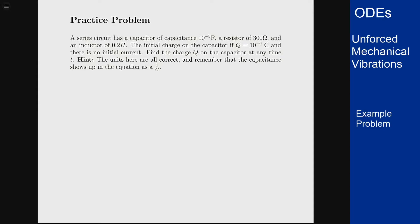In this example we want to analyze the following circuit and see how it's going to behave as a function of time. We have a series circuit with a capacitor of capacitance 10 to the minus 5 farads, a resistor of 300 ohms, an inductor of 0.2 henrys, but initial charge on the capacitor, that's our initial condition, is q is 10 to the minus 6 coulombs at the start and there's no initial current.